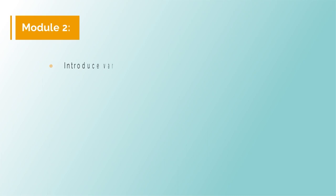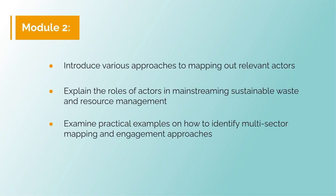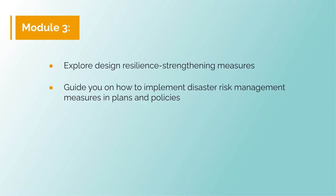The second module will introduce the various approaches to mapping out relevant actors and cover the roles they can play in mainstreaming sustainable waste and resource management to support adaptation and build resilience. In module two we will examine practical examples on how to identify multi-sector mapping and engagement approaches. The third part will cover how to design resilience strengthening measures that can be used when preparing, responding and recovering from disasters. The fourth part will guide you on how to implement disaster risk management measures in the plans and policies of your community. There are worksheet templates available for practicing and deepening your understanding of these subjects.